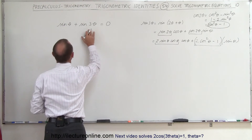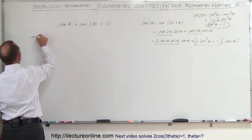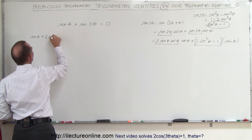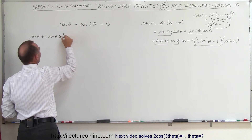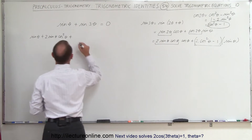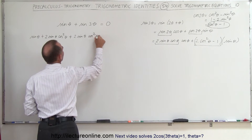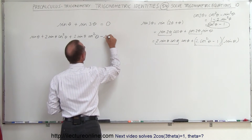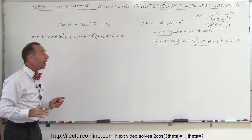That means the sine of 3 theta can be replaced by all of that. Let's plug it into the original equation and add it to the sine of theta. The left side now becomes: sine theta plus 2 sine theta cosine squared theta plus 2 sine theta cosine squared theta minus sine theta, and that equals zero.